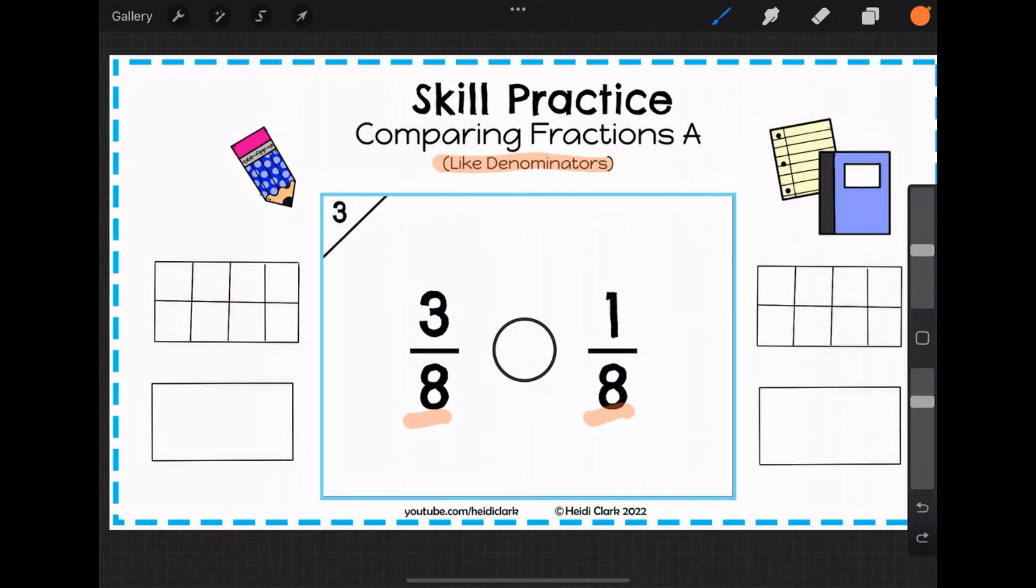So the numerator, three versus one. The numerator refers to how many pieces you actually get. So pieces are the same size either way. On this side, we've got three pieces. And on this side, one eighth, we've got one piece.